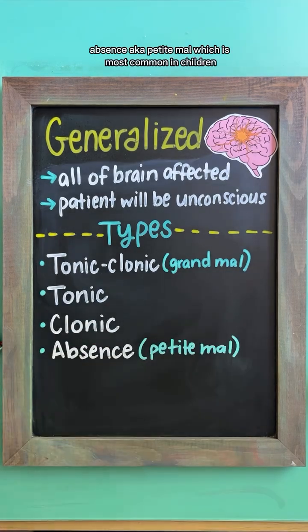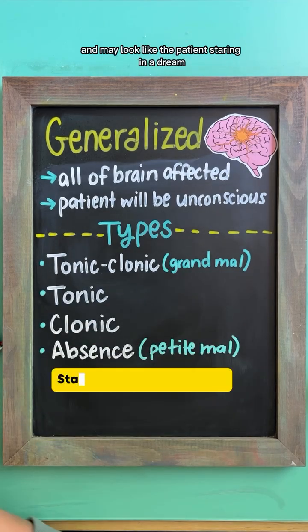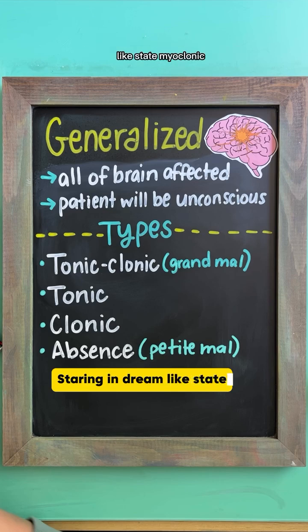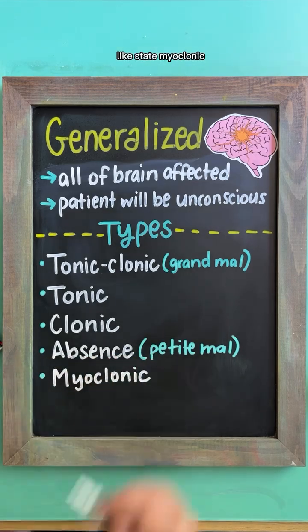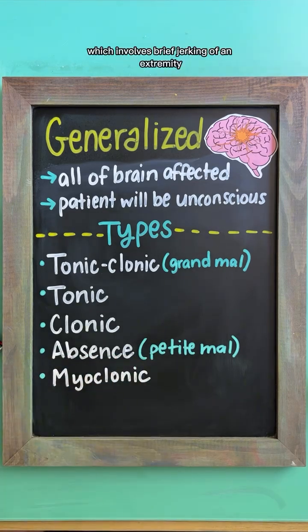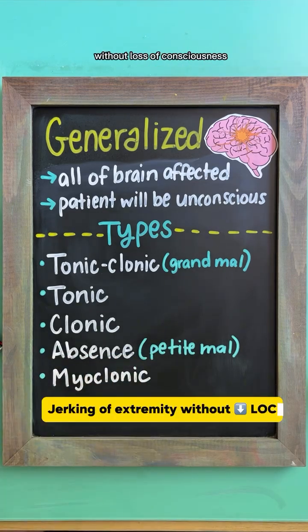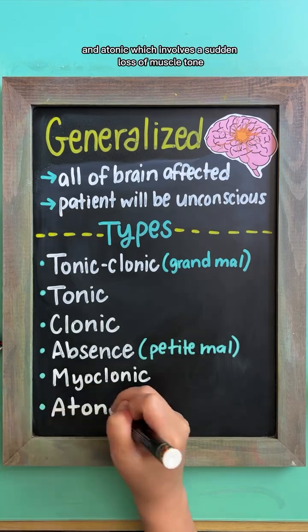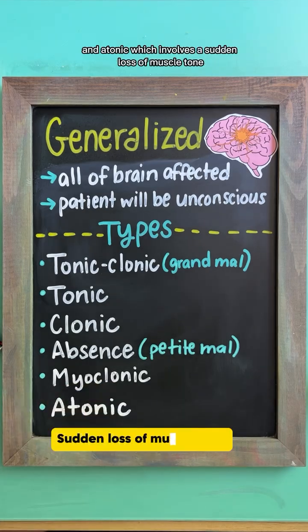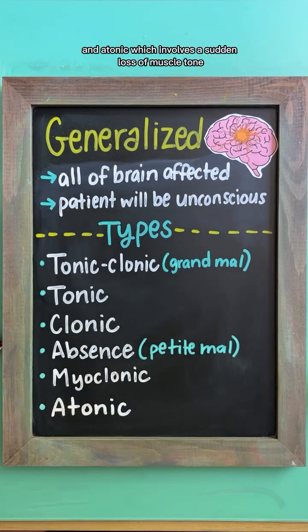Absence, aka petite mal, which is most common in children and may look like the patient's staring in a dreamlike state; myoclonic, which involves brief jerking of an extremity without loss of consciousness; and atonic, which involves a sudden loss of muscle tone.